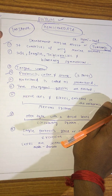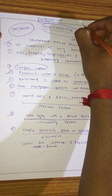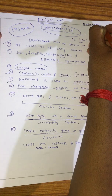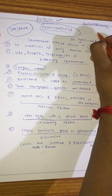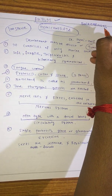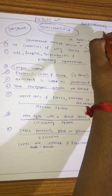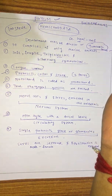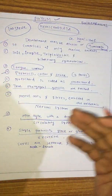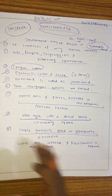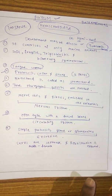The examples of Phylum Hemichordata are Balanoglossus and Cephalodiscus. These are the characters of Phylum Hemichordata.